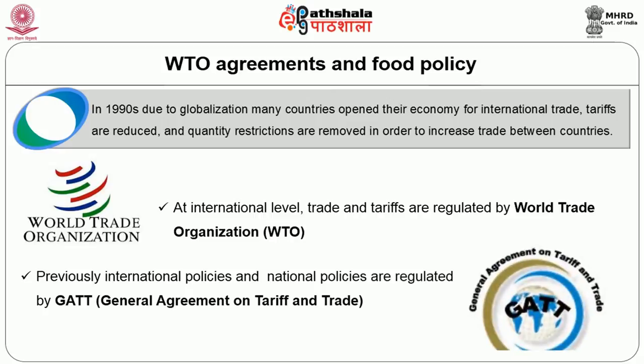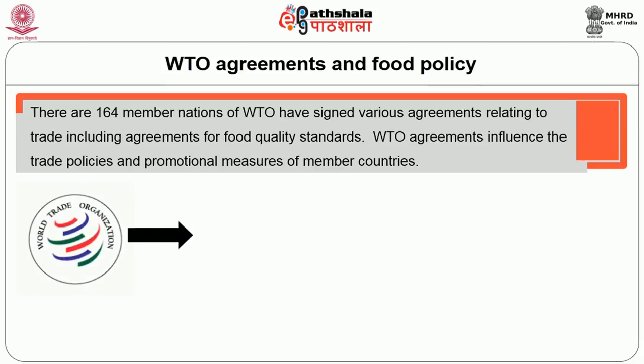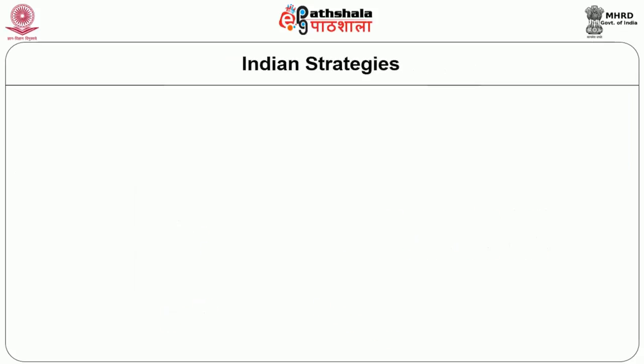Previously, international and national policies were regulated by GATT — General Agreement on Tariff and Trade. There are 164 member nations for the WTO. They have signed various agreements relating to trade, including agreements for food quality standards. It influences the trade policies and promotional measures of the member countries. WTO is one of the United Nations organizations, established in the year 1995. The headquarters is located at Geneva, Switzerland.